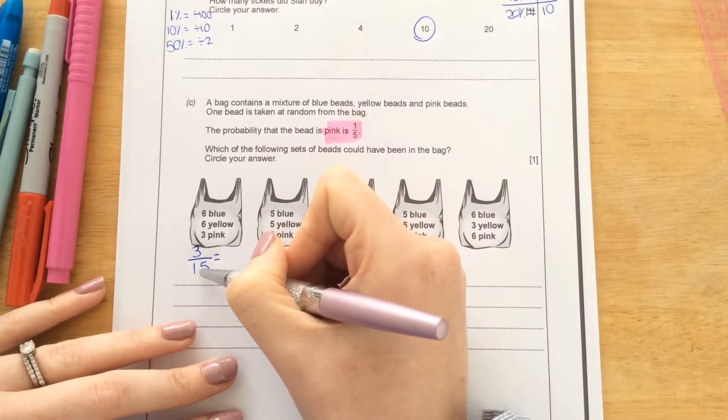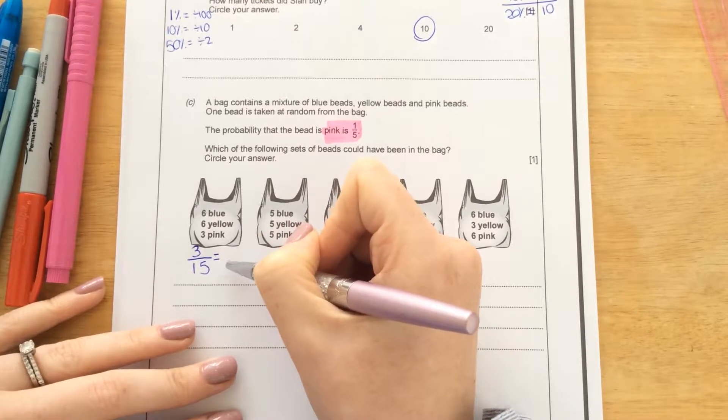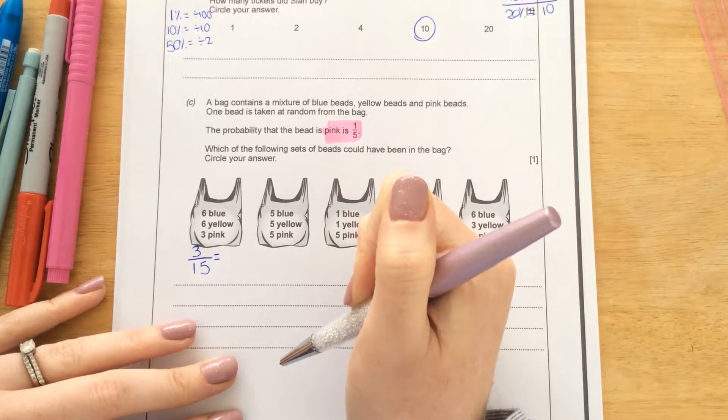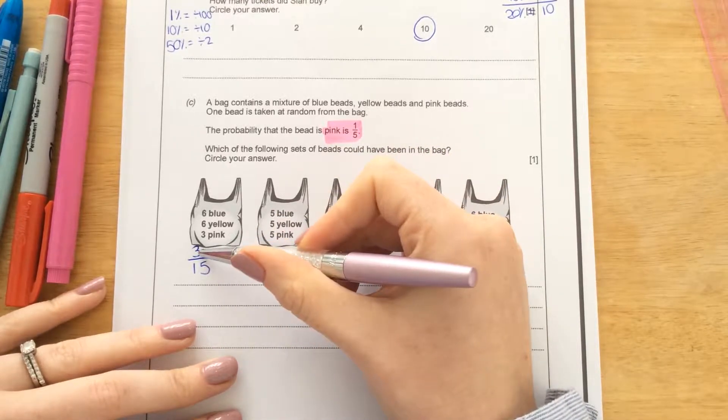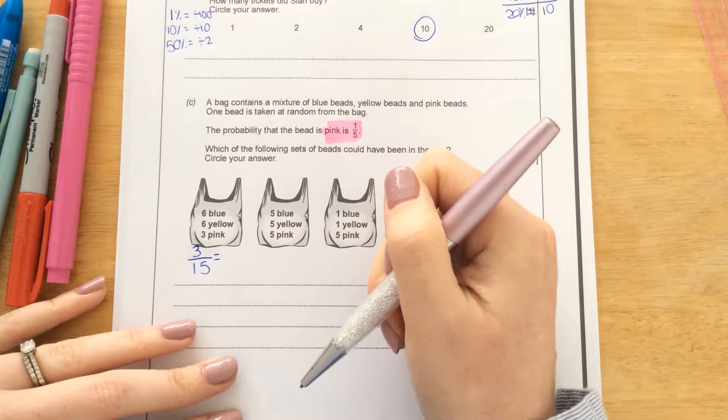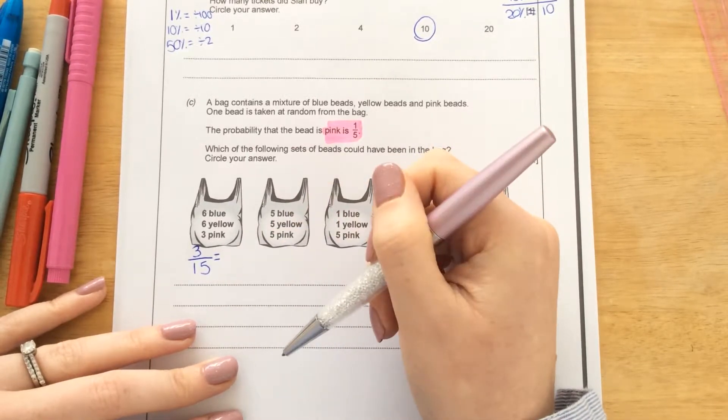So how many times does 1 go into 3? 3. How many times does 1 go into 15? 15. So that's why we don't use 1 when we are cancelling down. 2 doesn't go into 3 and 15. 3 goes into 3 and it also goes into 15. So now we ask ourselves how many times.